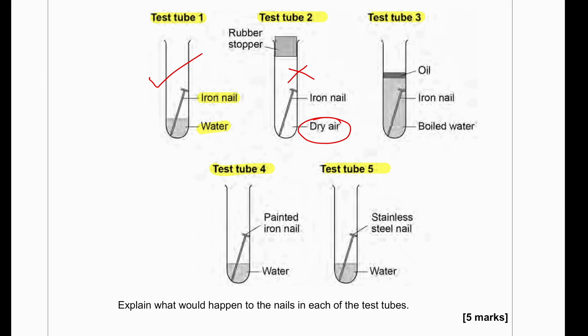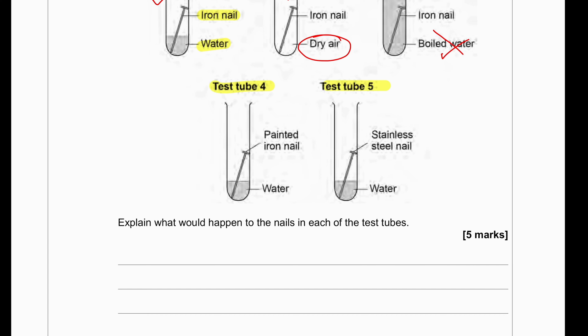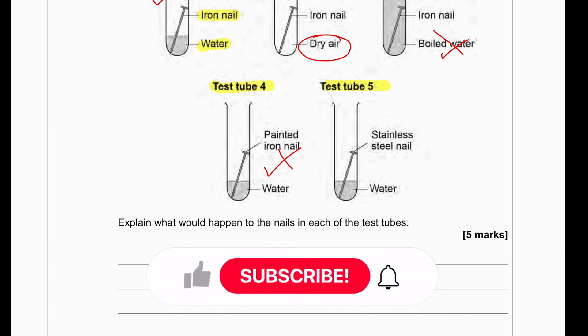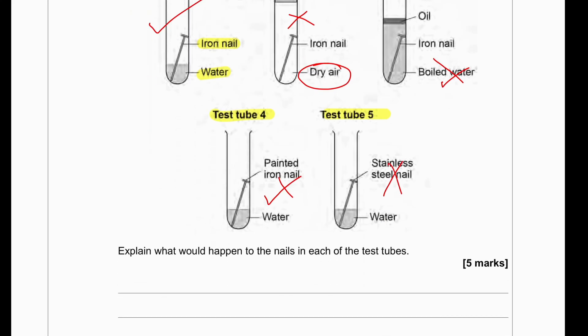Then we have test tube three with oil and boiled water. Boiled water does not have any oxygen and oil does not allow any oxygen. So, there will be no rusting in this one as well. And then painted iron nail and water, this will also not rust as well because there is painting. Stainless steel iron nail and water will also not rust. So, rusting will only occur in test tube one.